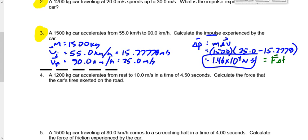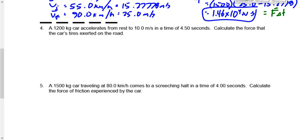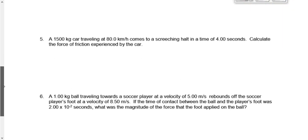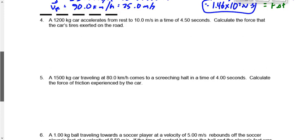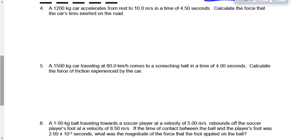In questions 4, 5, and 6 you're not asked to solve for the impulse — rather, you're asked to solve for the force. So get the impulse like you did in questions 1, 2, and 3, and then set the impulse equal to F times ΔT and solve for F.